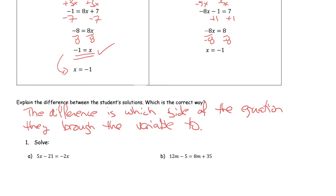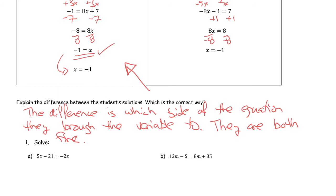Both approaches are fine. The big issue is: they're both fine as long as you're comfortable with the negative sign and okay manipulating an equation with a negative sign in it. If you know that's not going to work well for you, then you want to move the smaller term over, because that will allow you to avoid multiplication or division by a negative in a later step.